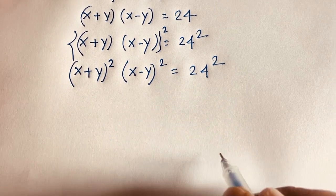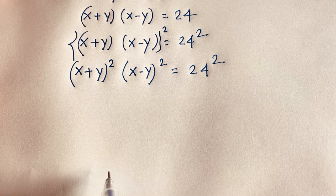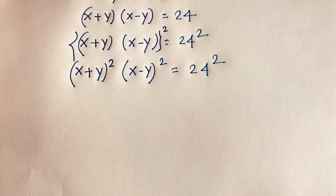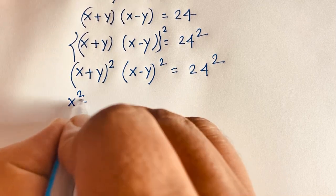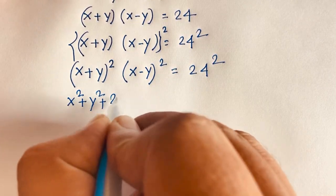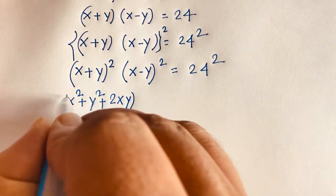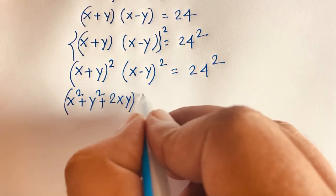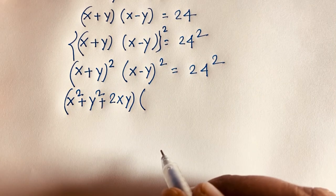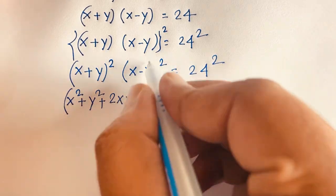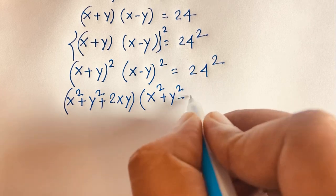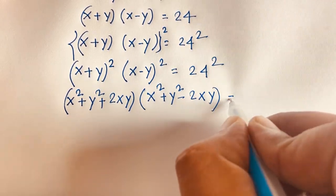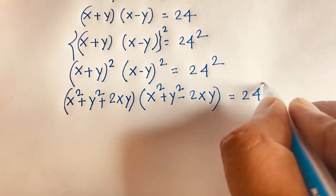We know that (a plus b) whole squared equals a squared plus 2ab plus b squared. According to this law, the first part becomes x squared plus y squared plus 2xy. And (a minus b) whole squared equals a squared plus b squared minus 2ab. So the second part gives x squared plus y squared minus 2xy, all equal to 24 squared.